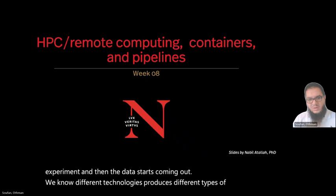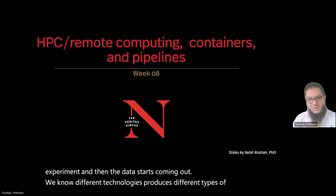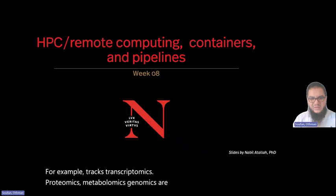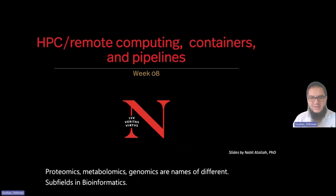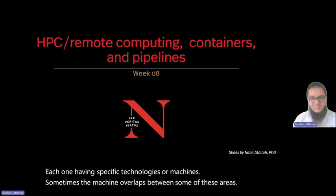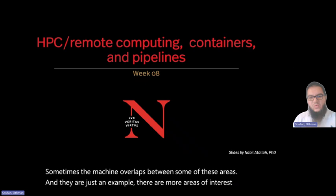We know different technologies produce different types of data. For example, transcriptomics, proteomics, metabolomics, genomics are names of different subfields in bioinformatics, each one having specific technologies or machines. Sometimes the machine overlaps between some of these areas, and they are just an example. There are more areas of interest.